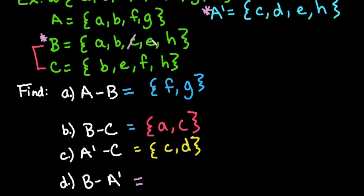So we can see that we can cross out the C, the E, and the H. So we are left with the letters A and B. So the only letters that are just in B but not also in A naught, or the complement of A, are the letters A and B.